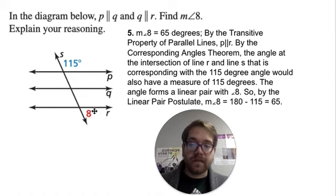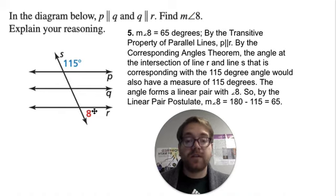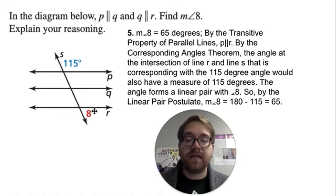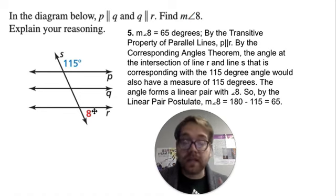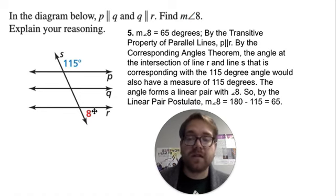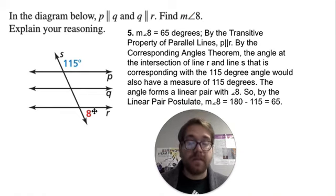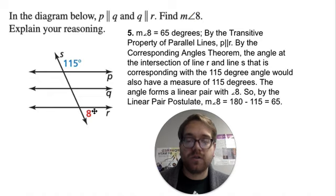Using these different theorems and properties, we were able to determine if lines were parallel — as in the previous example — and determine the measurements of angles. We used the transitive property of parallel lines and the corresponding angles theorem. Remember, you don't have to memorize all those properties and theorems. You've got your reasons notes to look at and use to justify your reasoning. But we need to know how to use them and make sense of them — they're supporting your thinking and giving you a reason for why you're doing what you're doing.